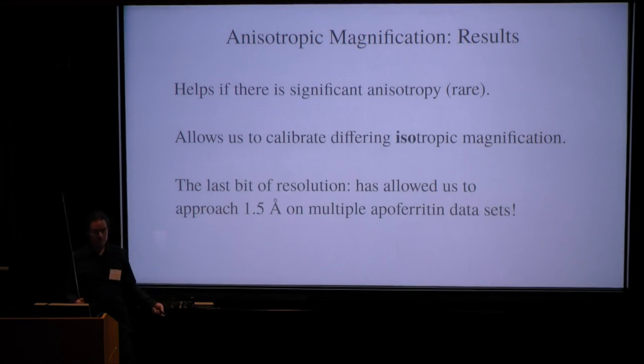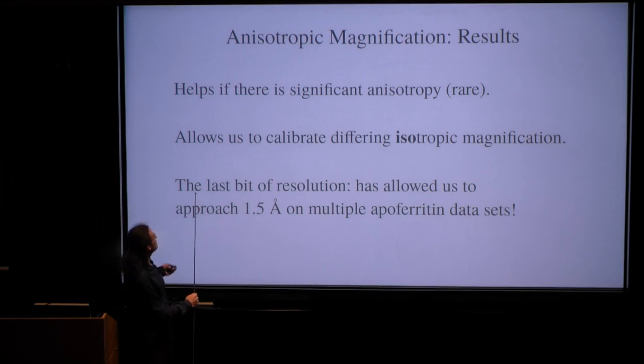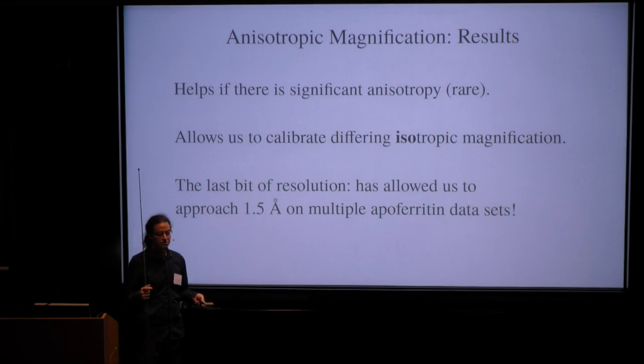It only helps, however, if there is significant anisotropy, and that is rare. What it also does, however, is it allows us to estimate the relative magnifications in a heterogeneous dataset. So sometimes people will merge images collected on different microscopes or on the same microscope after alignment. So the magnification is maybe nominally the same, but in reality it varies by a couple of percent. And with this method, you can now estimate the relative magnifications of the different sub-datasets. And finally, it's the last thing that one can do. It usually produces a small improvement because there usually is some little bit of anisotropy.